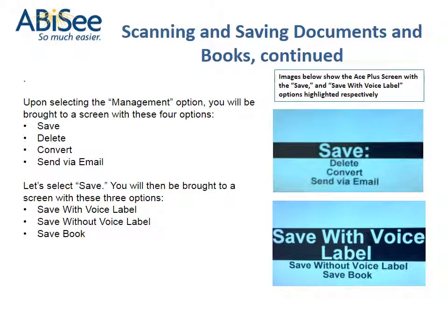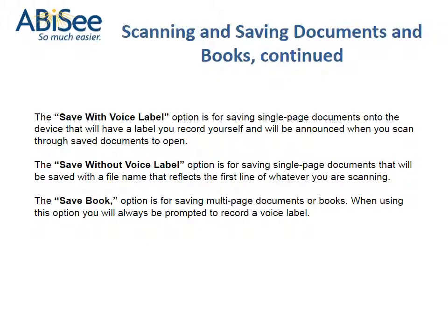Scanning and saving documents and books. Upon selecting the management option, you will be brought to a screen with these four options: Save, Delete, Convert, Send via email. Let's select Save. You will then be brought to a screen with these three options: Save with voice label, Save without voice label, Save book. The save with voice label option is for saving single page documents onto the device that will have a label you record yourself. The save without voice label option is for saving single page documents that will be saved with a file name reflecting the first line of whatever you are scanning. The save book option is for saving multi-page documents or books, and will always prompt you to record a voice label.